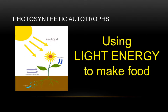You are probably most familiar with photosynthetic autotrophs. These are organisms, like plants, that use light energy to produce carbohydrates such as glucose in a process known as photosynthesis. These autotrophs live where light is available, and solar energy drives their food production.